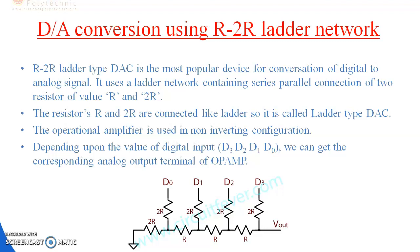The resistors R and 2R are connected like a ladder, so it is called the ladder type DAC. The operational amplifier is used in a non-inverting configuration. Depending upon the value of digital inputs D3, D2, D1, and D0, we can get the corresponding analog output. The circuit diagram of the R-2R ladder network uses two resistors R and 2R connected in both series and parallel.